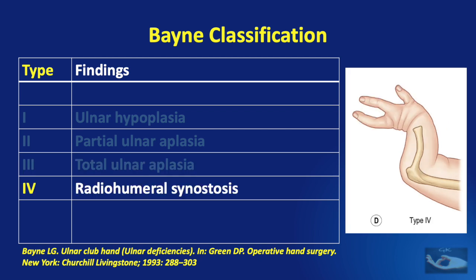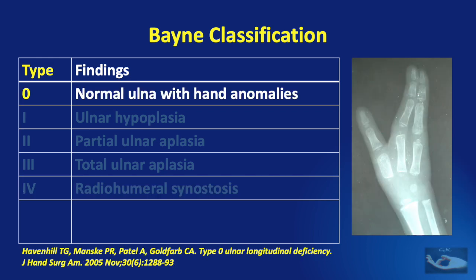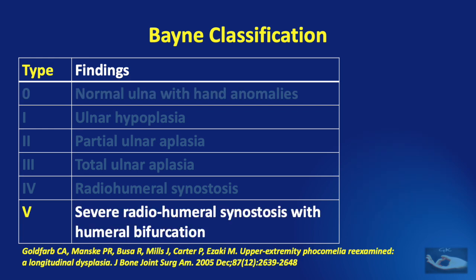Type 4 refers to radiohumeral synostosis with considerable bowing of the radius and usually malformation of the hand as well. Havenhill and Manske et al. in 2005 proposed another type called Type 0, where there is a normal ulna with hand anomalies alone — that is involvement of the ulnar border of the hand. Goldfarb introduced Type 5, where there is severe radiohumeral synostosis with humeral bifurcation.